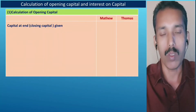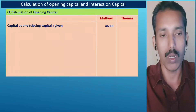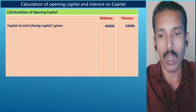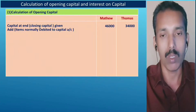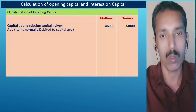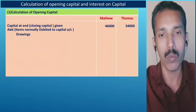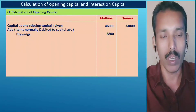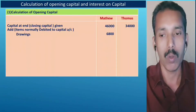Capital at the end of the year — closing capital — is given: Matthew Rs. 46,000 and Thomas Rs. 34,000. Items normally debited to the capital account — drawings and interest on drawings — need to be added. The debit items are identified from the problem.